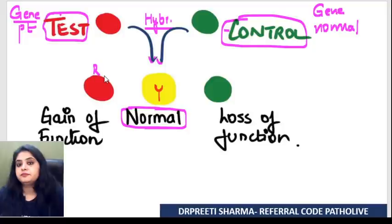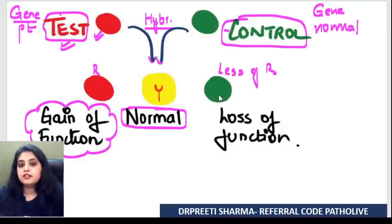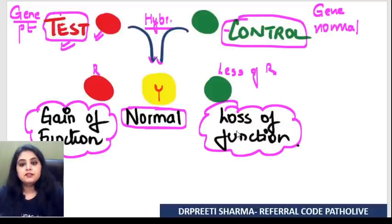If you get a red color, there was something more in the patient — a gain of function mutation. If you end up getting less red, less of the patient is showing in the end result, meaning the patient has something missing — that is loss of function mutation.